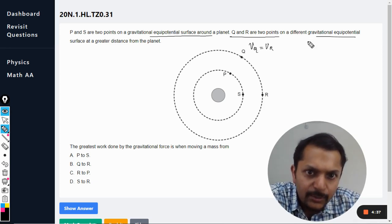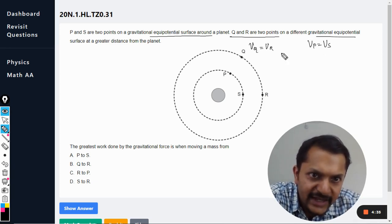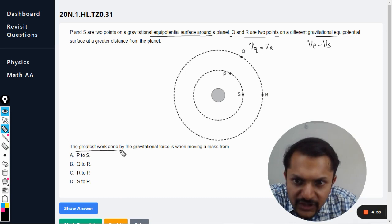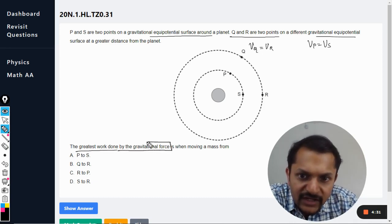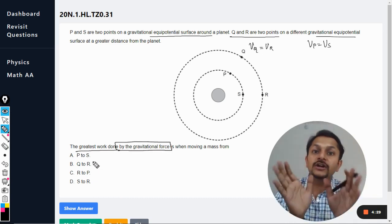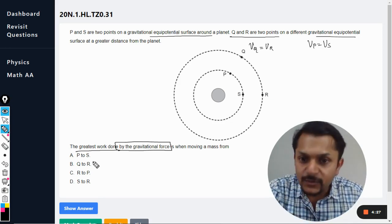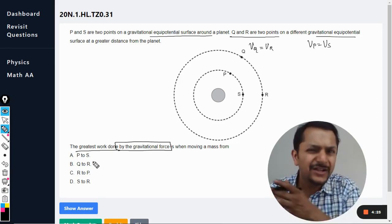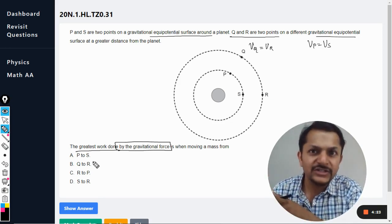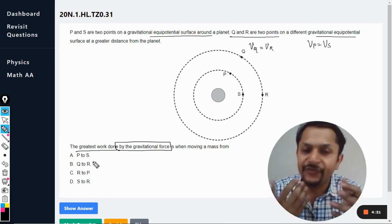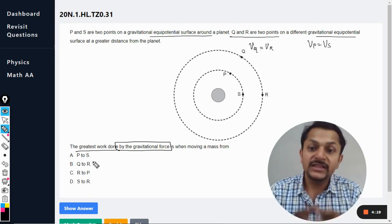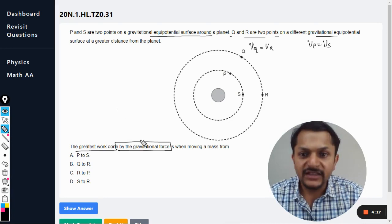The greatest work done by the gravitational force. So these are the golden words we have to note, and this is what I was mentioning in some earlier questions. Whenever somebody is framing these questions, they must write this thing, they must give this thing: are they talking about the work done by the gravitational force, or are they considering work done by external agency?